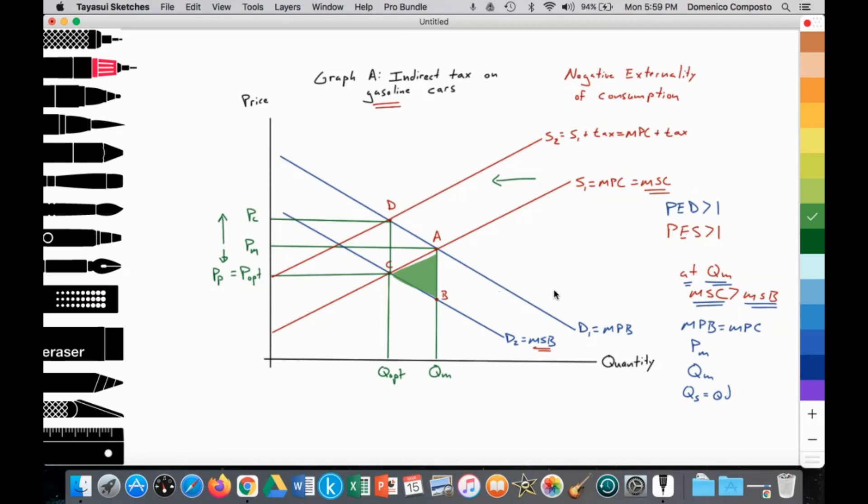So social optimum would be achieved where MSC equals MSB. Thus, D2 is equal to the marginal social benefit. It highlights that society would like less demand for gasoline cars. So allocative efficiency is achieved where MSC equals MSB. That would provide the optimal price, the social optimal price of P-opt and the social optimum quantity of Q-opt.